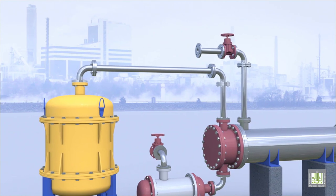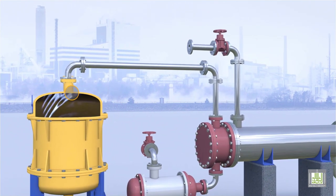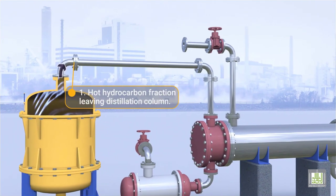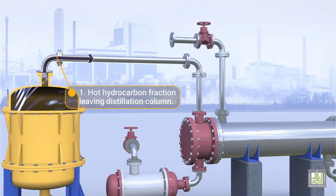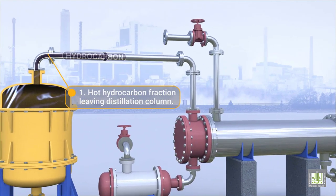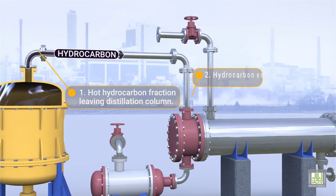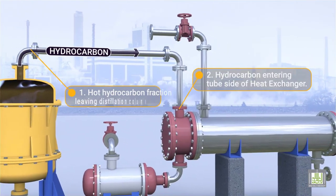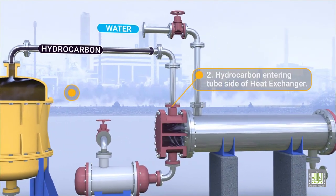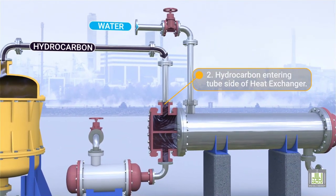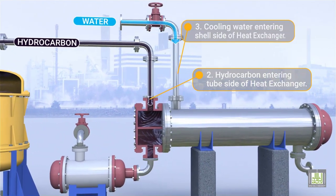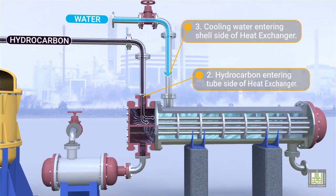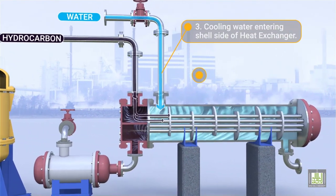Flow Pattern: 1. Hot hydrocarbon fraction leaving the distillation column. 2. Hydrocarbon entering the tube side of the heat exchanger. 3. Cooling water entering the shell side of the heat exchanger.